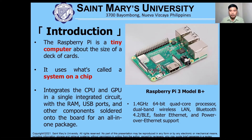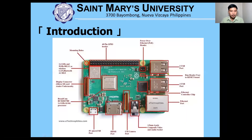It also has USB ports and other components such as HDMI, a power adapter, and audio and video outputs. Here is a diagram of the major parts with a legend. Overall, there are four USB ports, an Ethernet port, a video and audio socket, camera port, HDMI port, a 5-volt power port, the processing unit, display connector, and GPIO pins.